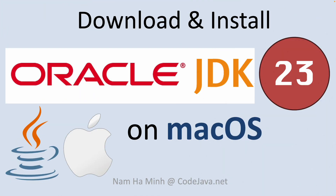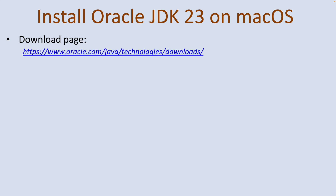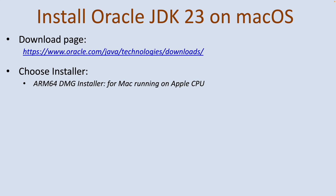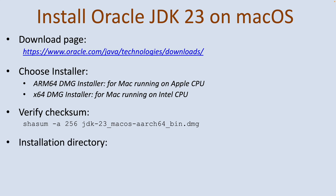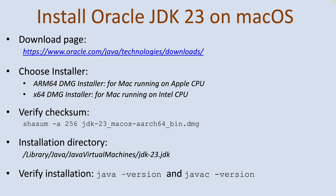That's my guide on how to download and install Oracle JDK 23 on macOS. To sum up the key points: it is strongly recommended to download the installer from Oracle's official Java download page. You can choose the ARM64 DMG installer for Mac running Apple CPU, or the x64 DMG installer for Mac running Intel CPU. It is also strongly recommended to verify the integrity of the downloaded file using the 'shasum -a 256' command. The default installation directory is at Library/Java/JavaVirtualMachines.